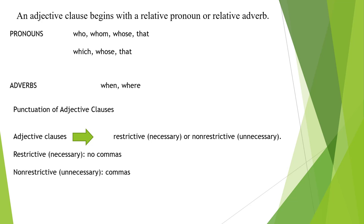Restrictive (necessary, no commas): 'The professor who teaches my biology class won a Nobel Prize two years ago.' The clause 'who teaches my biology class' is necessary to identify which professor. 'He won the prize for research that might lead to a cure for AIDS.' Non-restrictive (unnecessary, commas): 'Professor Jones, who teaches my biology class, won a Nobel Prize two years ago.' The person is identified by name, so the clause is extra information.